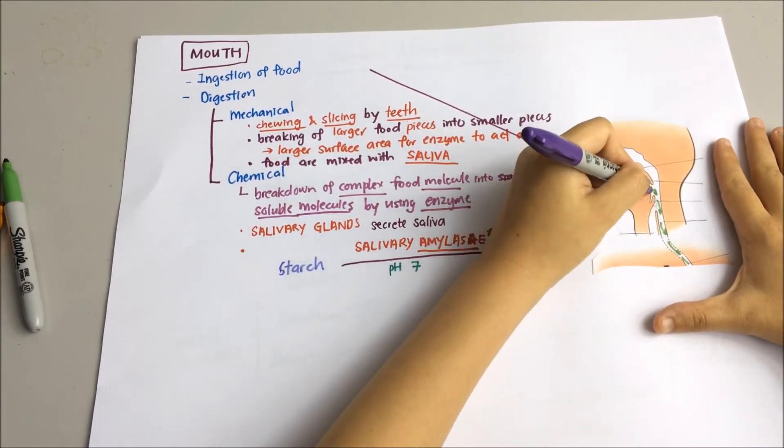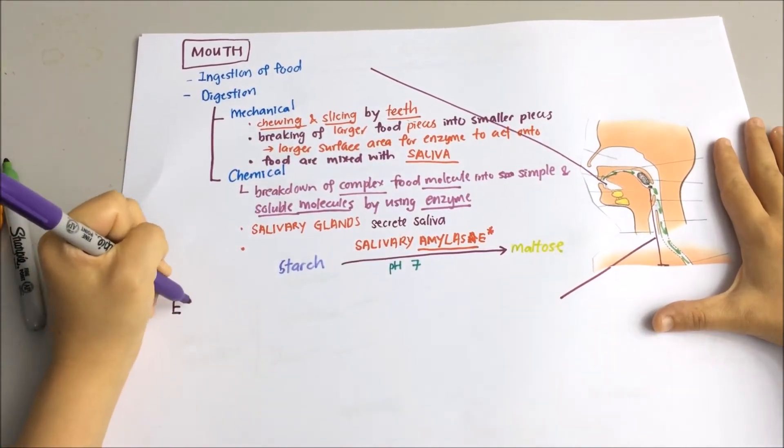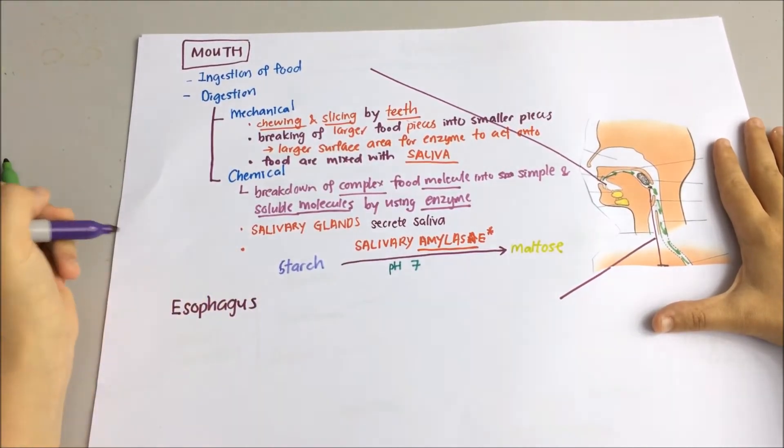During swallowing, the food will be formed into a ball by the tongue and pushed to the back of the mouth down to the esophagus. And the ball of food is known as bolus.